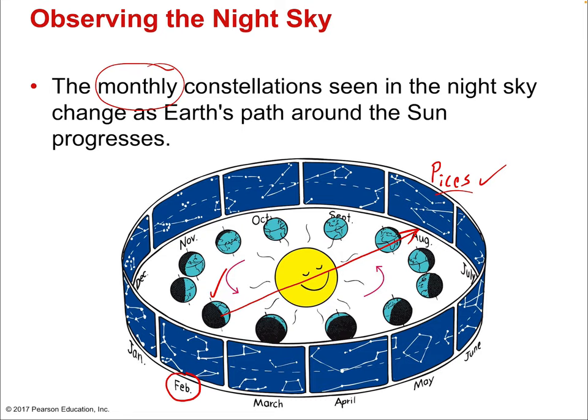The only time you would see that constellation during its associated month — for example, Pisces in February — would be during a full solar eclipse, when the moon blocks out the sun's intense light, making stars visible for a few minutes. In February, the constellations you'd actually see overhead would be associated with the zodiac of August, something like Leo.